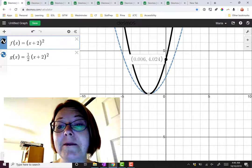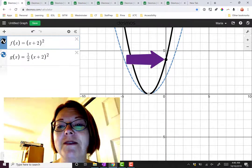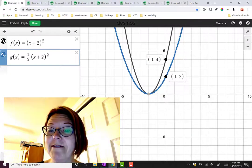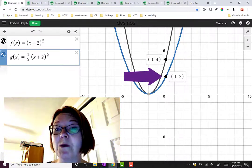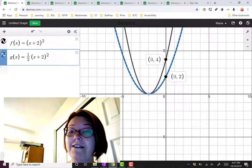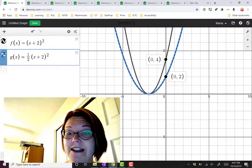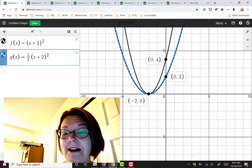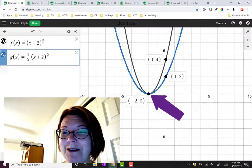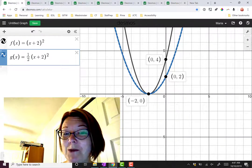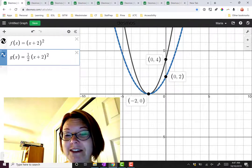For example, on the original graph, there was a point at 0, 4, and on the new graph of g(x), there's a point at 0, 2. So the y value has been exactly halved. Notice that on both graphs, we have the point negative 2 comma 0, because when we multiply 0 by 1 half, we still get 0.